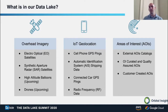Areas of interest are a third data type — they can come from external AOI catalogs, our own curated and quality-assured AOIs, or customer-created AOIs. At the end of the day, anything that has a latitude and longitude associated with it, we want in our data lake.